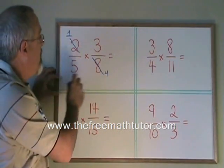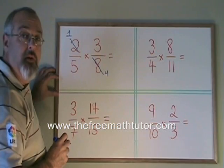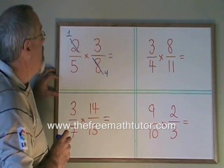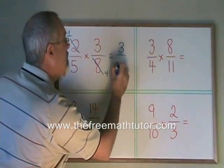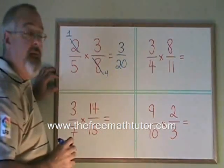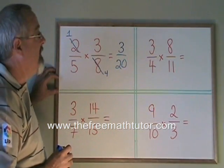Now I can't see any other canceling opportunities, so I'm going to do my multiplication. 1 times 3 is equal to 3, 5 times 4 is equal to 20. I have my final answer, 3 twentieths, which cannot be further reduced.